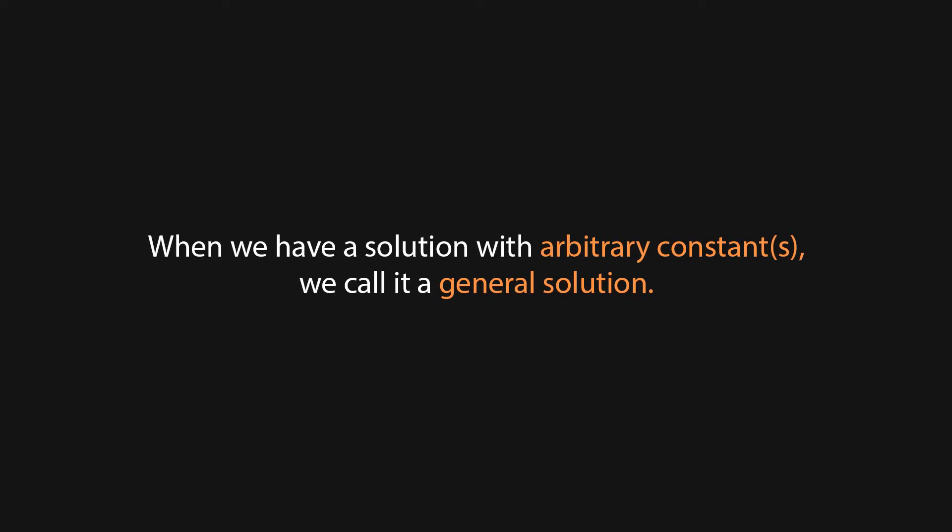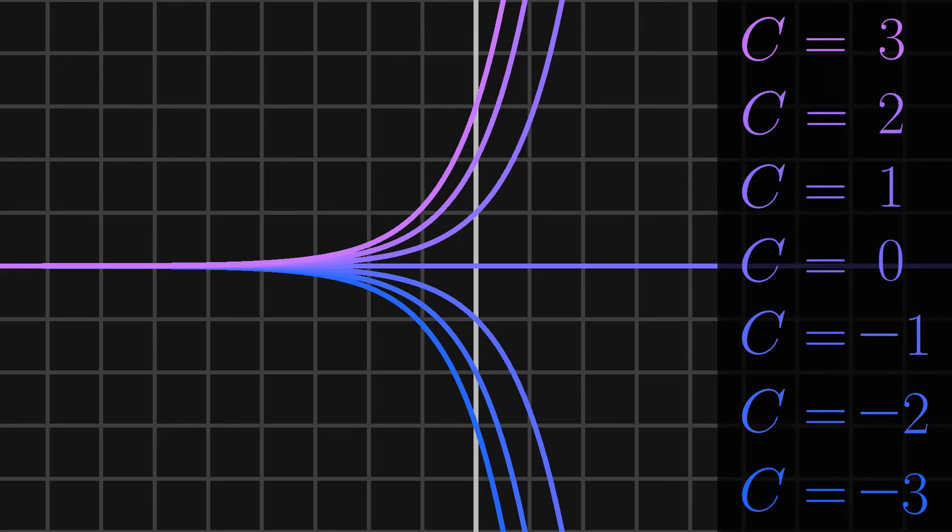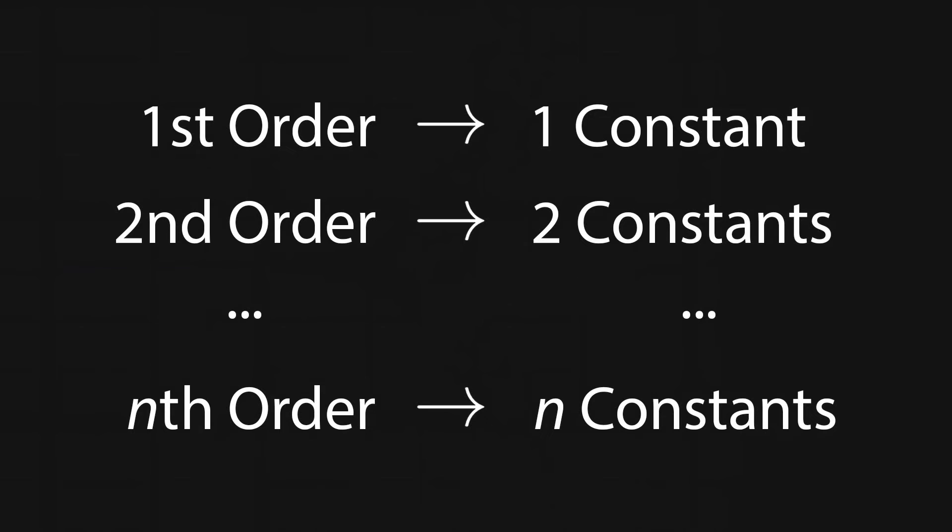When we got a solution with arbitrary constant, we call it a general solution. You can kind of think of this c like a constant of integration. I also want you guys to notice that if we graph a couple of examples with different values for c, we get a family of curves. It's also worth pointing out that in an nth-order equation, we'll get n constants.